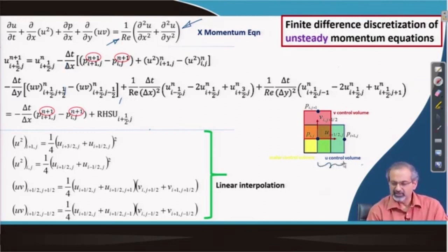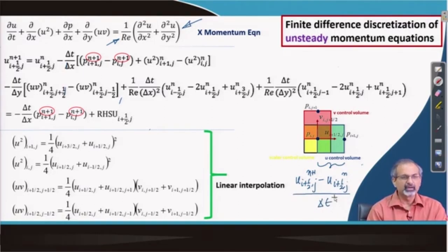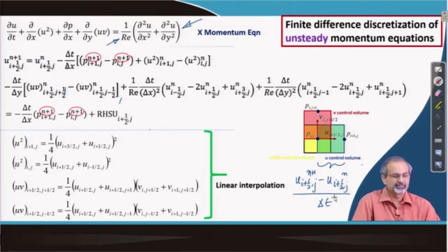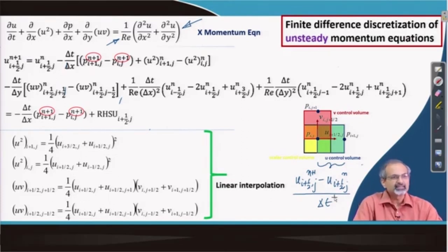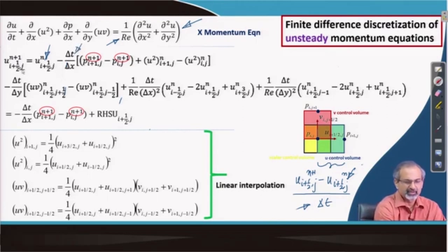We must remember to discretize this equation in the u control volume. Following the first-order Euler scheme, the time derivative may be discretized accordingly. What you leave behind on the left-hand side is the (n+1)th time-step velocity that you would like to generate in order to move to the next time step. The nth term is transposed to the right-hand side. Because you have generated a Δt term in the denominator, if you multiply the whole equation by Δt, then Δt carries over to all the terms on the right-hand side.